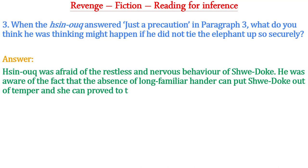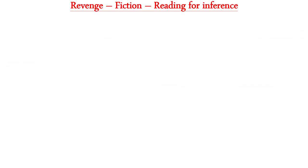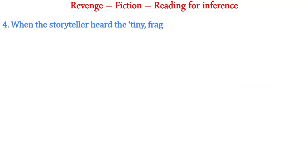Question three: When the Shinok answered 'just a precaution' in paragraph three, what do you think he was thinking might happen if he did not tie the elephant up so securely? The answer is: Shinok was afraid of the restless and nervous behavior of Shuidok. He was aware that the absence of a long familiar handler could put Shuidok out of temper and she could prove to be dangerous for the residents of the camp.